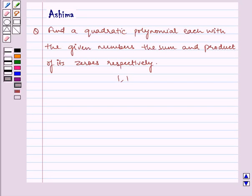Hello and welcome to this session. Let us discuss the following problem today. Find a quadratic polynomial with the given numbers as the sum and product of its zeros respectively. That is 1, 1. Let us write the key idea first.